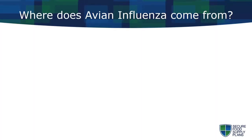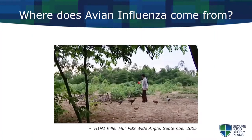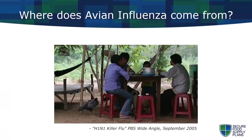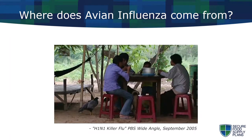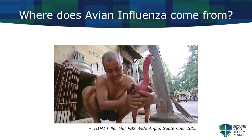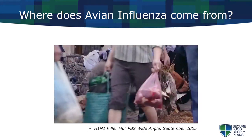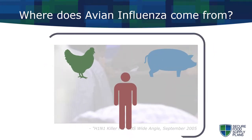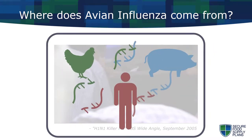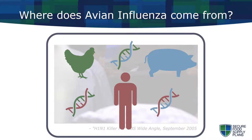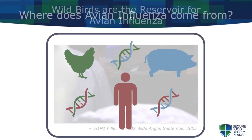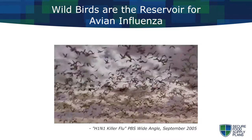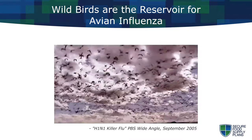New strains of avian influenza may originate in Asia, where wild birds, domestic poultry, swine, and people are in close proximity on farms, homes, and in live bird markets. This extremely close contact allows the AI virus strains to swap genes, sometimes even among strains in different species. Wild birds can become the reservoir for the AI viruses, and they may not show symptoms of the disease.